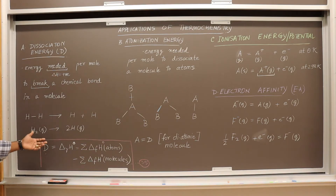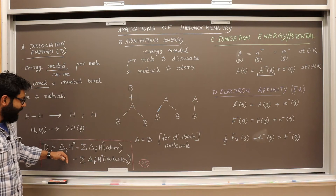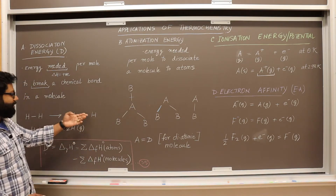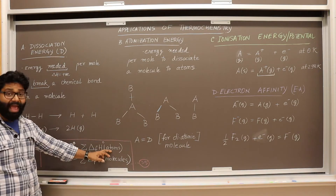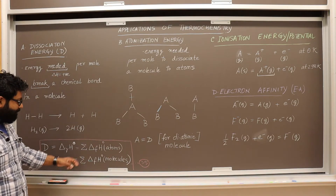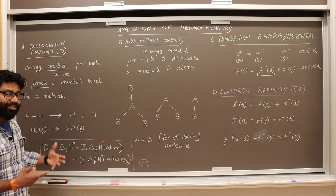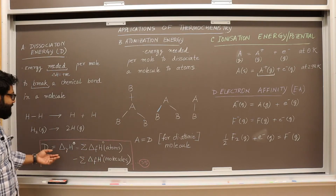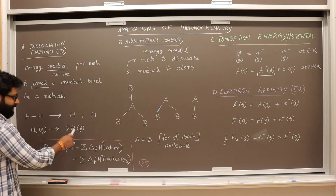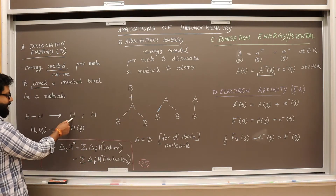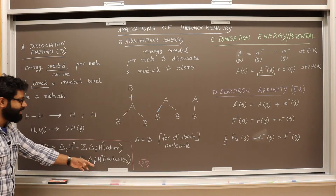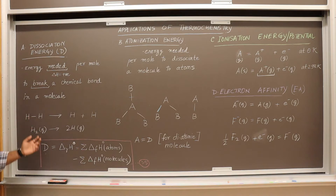How will you calculate that? It's very simple. The ΔHr is basically the summation of the heat of formation of the products — in this case, which are the atoms — and you subtract from that the summation of the heat of formation of the reactants, which is the molecule. You sum the ΔHf of each of these atoms — in this case, two hydrogen atoms — and subtract the ΔHf of the hydrogen molecule. That will give you the dissociation energy.